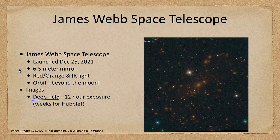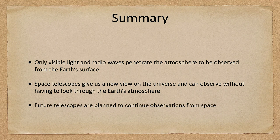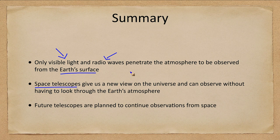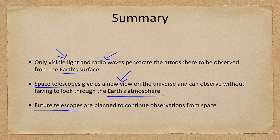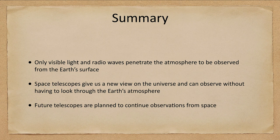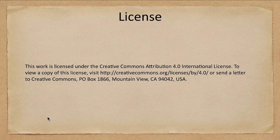In summary, only visible light and radio waves penetrate Earth's atmosphere and can be observed from the surface — some infrared is possible but limited. Space telescopes give us a new view of the universe and observe without the distorting effects of Earth's atmosphere. There are still future telescopes planned that will continue to improve our understanding, with James Webb having been launched only recently. That concludes this lecture on space telescopes — we'll be back next time for another topic in astronomy.